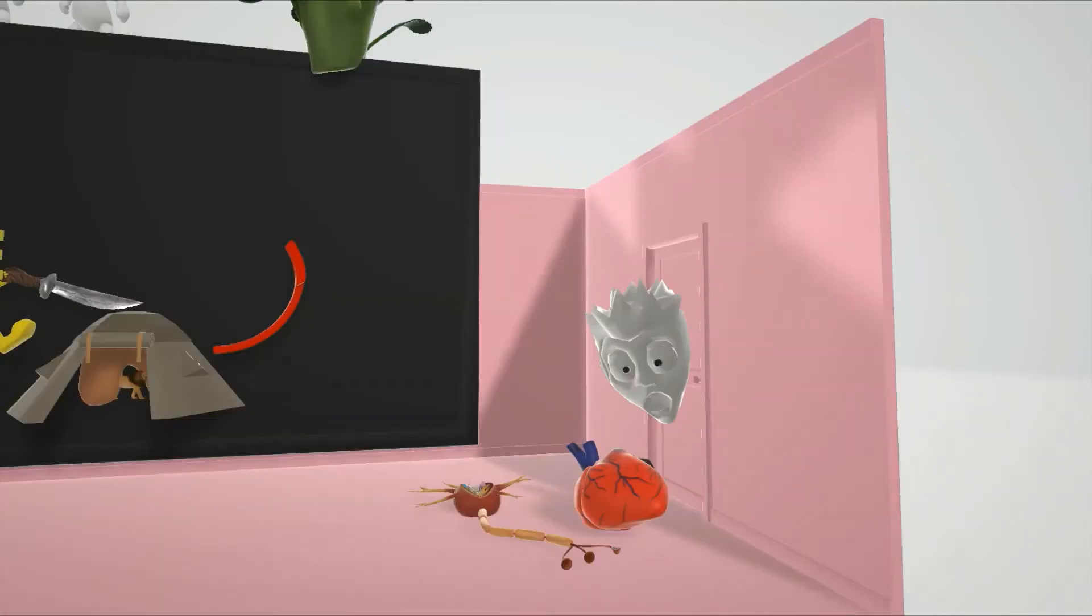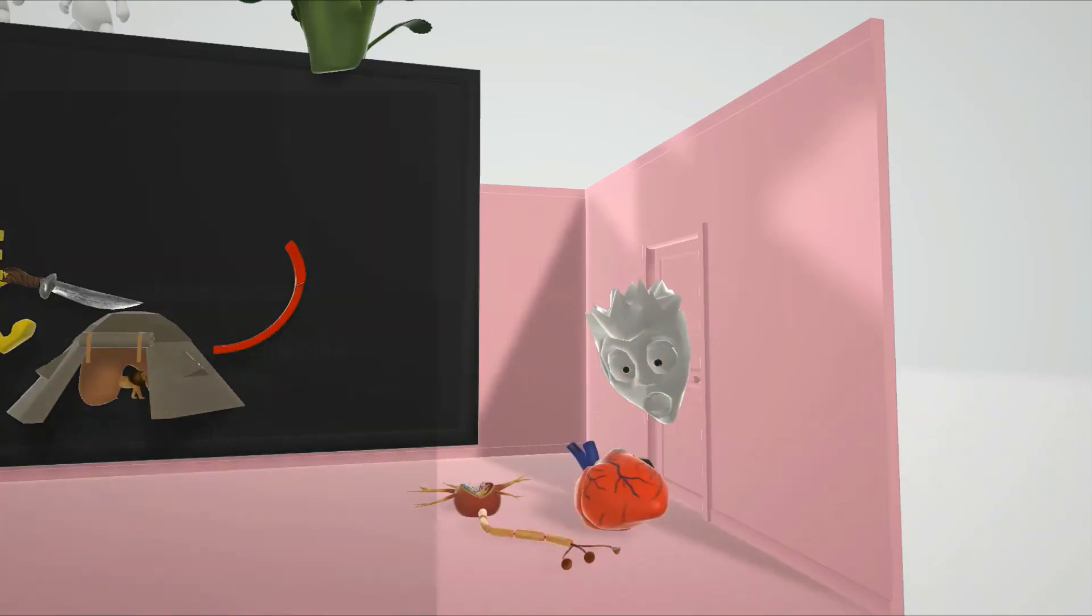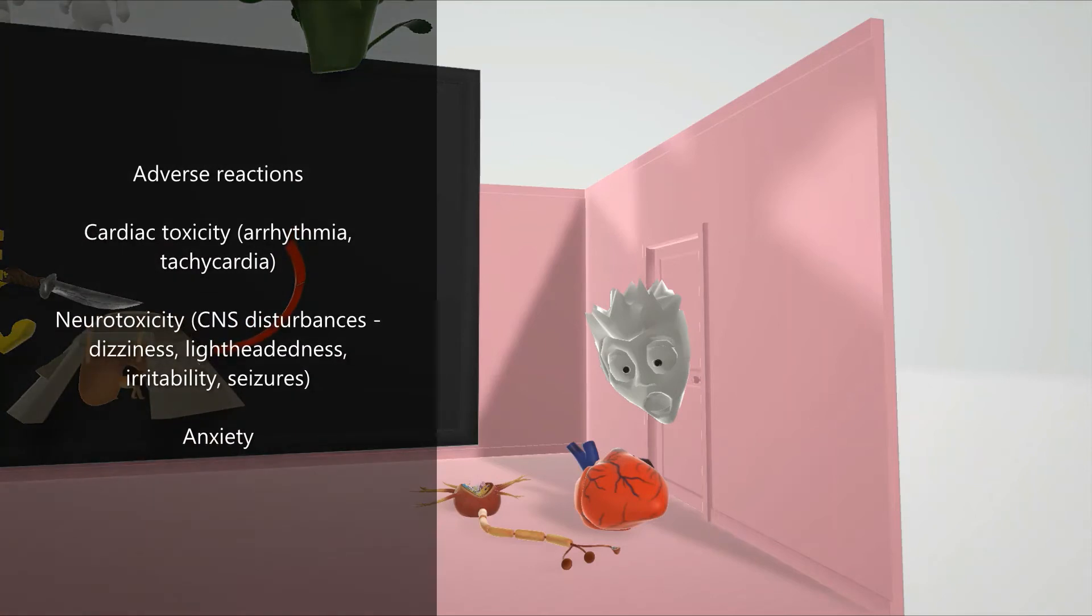So here we see this guy having a lot of anxiety because the heart and nerve on the floor are exploding. The heart exploding reminds us of cardiotoxicity. This drug has a very narrow therapeutic index, and patients taking this medication can develop cardiac abnormalities such as arrhythmia or tachycardia.